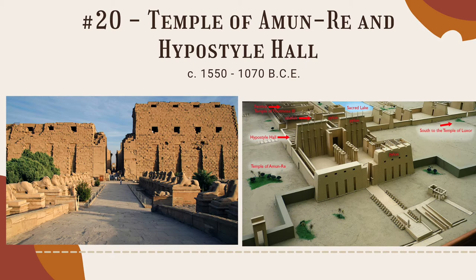Two of the most fantastic features of the complex include the avenue of ram sculptures and the world's tallest obelisk, although the obelisk was eventually taken to Rome by Constantine.